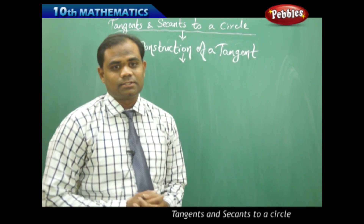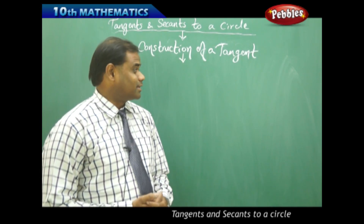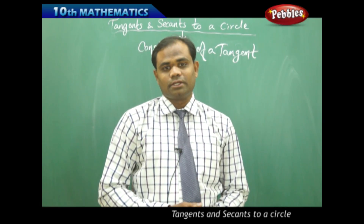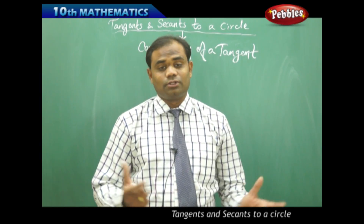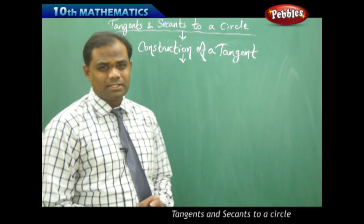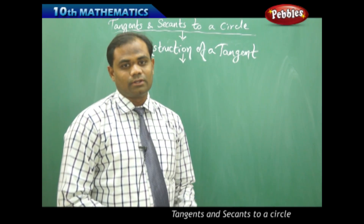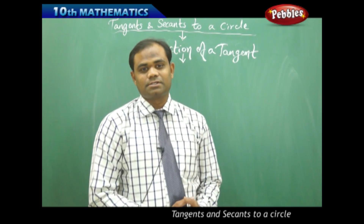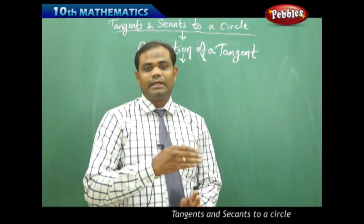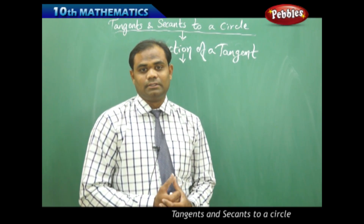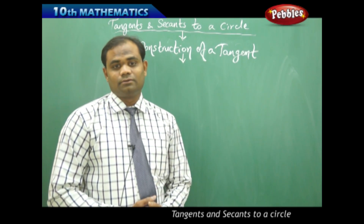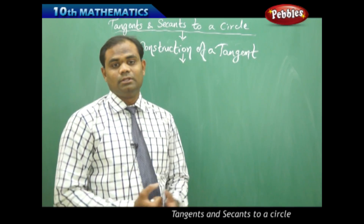Now, construction of a tangent — how do we geometrically construct a tangent to the circle at a particular point on the circle using geometrical instruments is what we are going to discuss. It's quite easy because construction of a tangent is based on the theorem which says that the radius is always perpendicular to the tangent at the point of contact. Using that property, let's see how a tangent can be constructed for a circle with suitable radius.